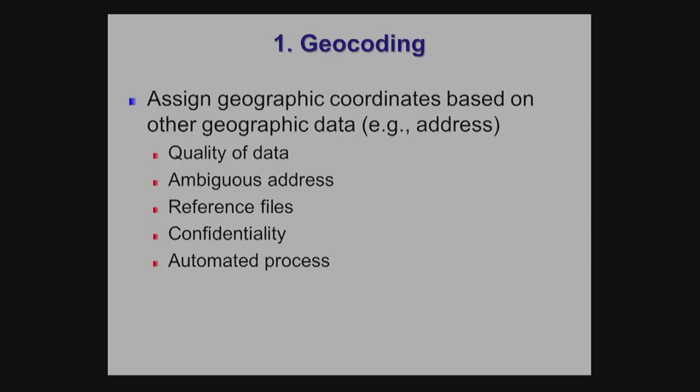If you have addresses that are incomplete, ambiguous, don't have the right street name, or don't have the house number, then you probably won't be able to geocode a large percentage of your data, making it not useful for the work you want to do. Another issue is that hospital records for a particular disease may not allow you to use addresses because of confidentiality issues. It can be that you do have the ideal data, but you're not allowed to geocode it because you don't have permission.